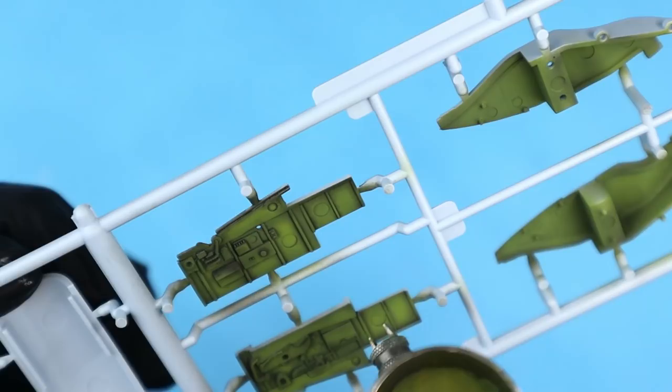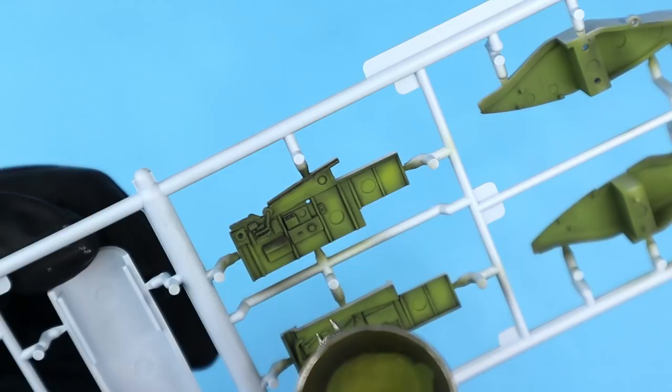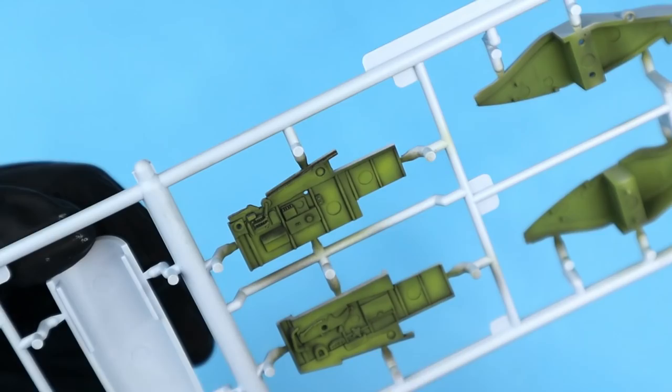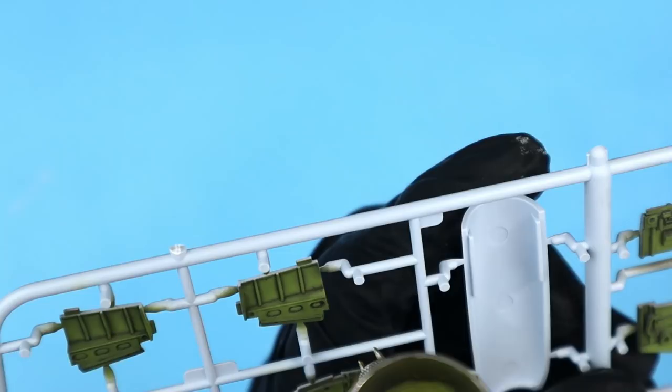The next step was to lighten my cockpit color using a little more of that yellow zinc chromate and then spray a light coat on the high spots and avoid the recessed areas that had received the oil wash.